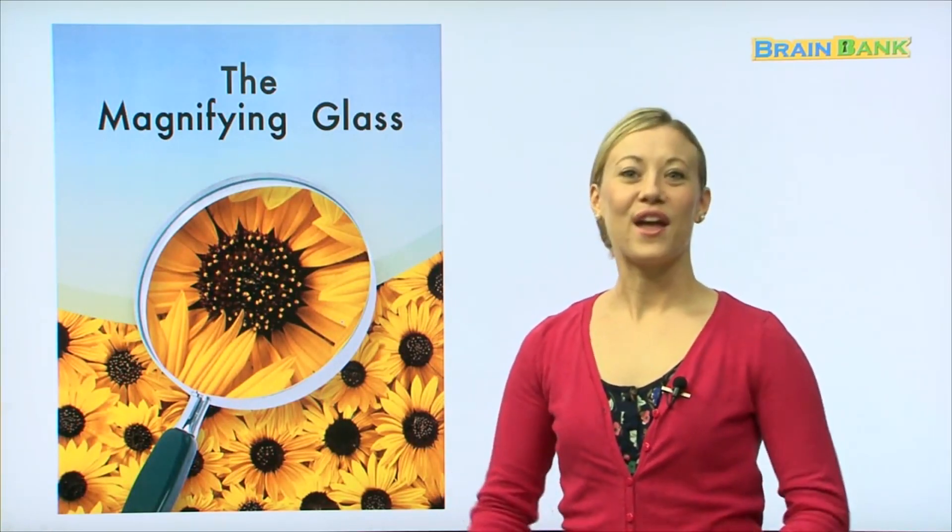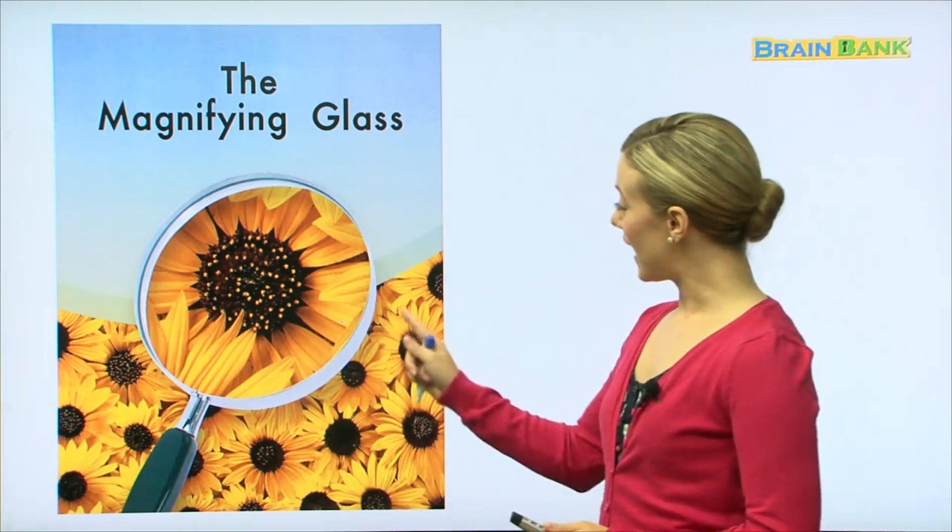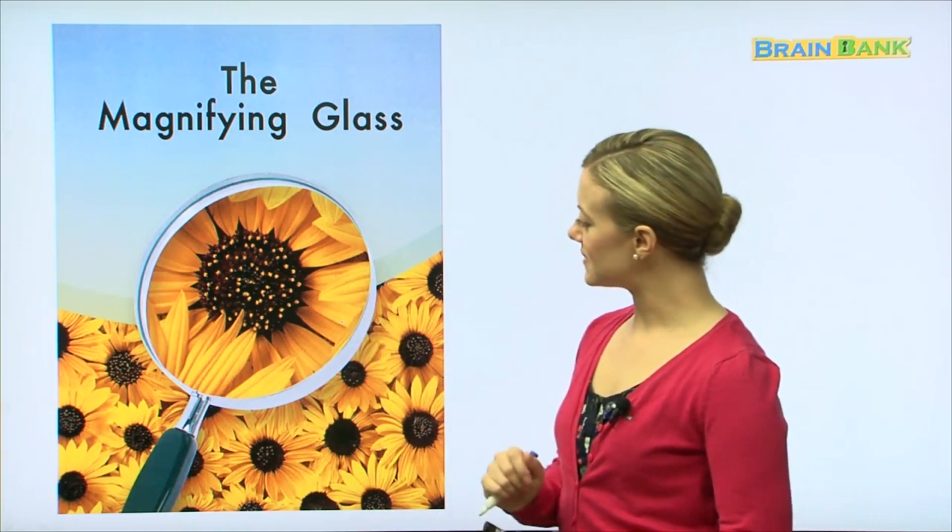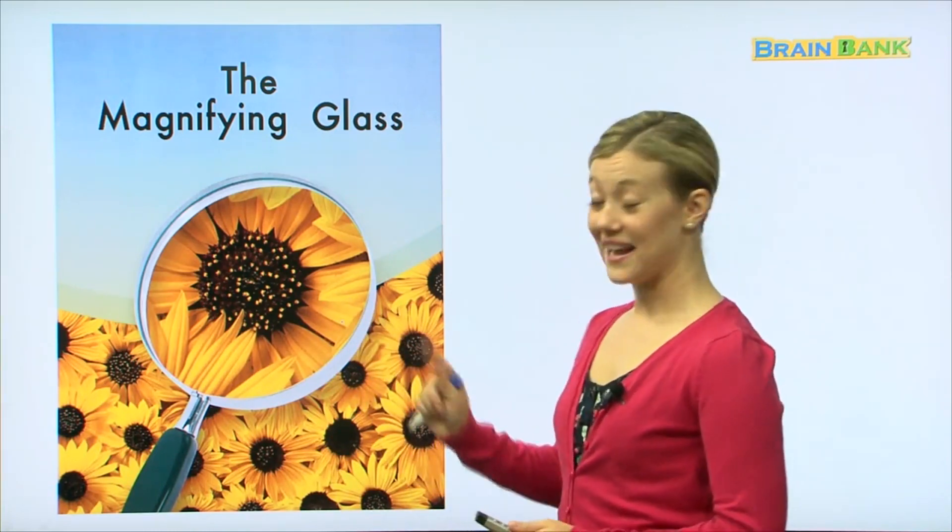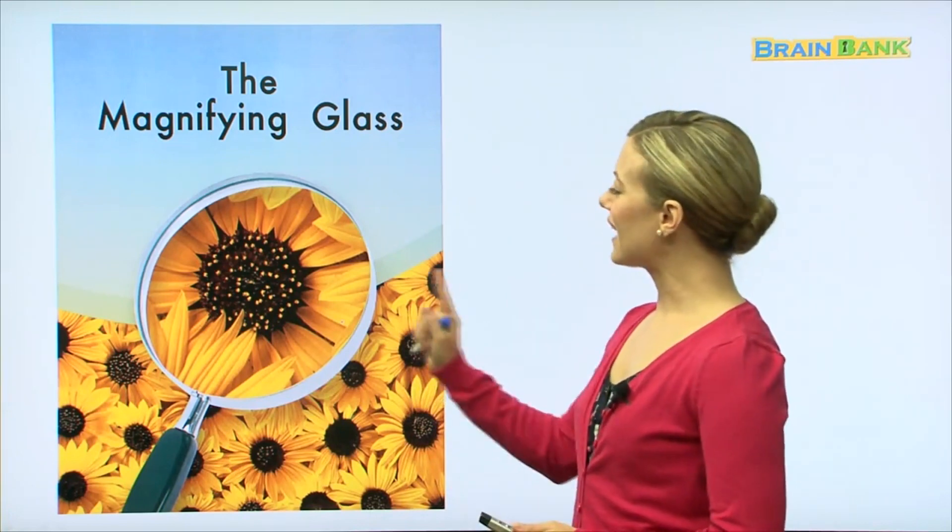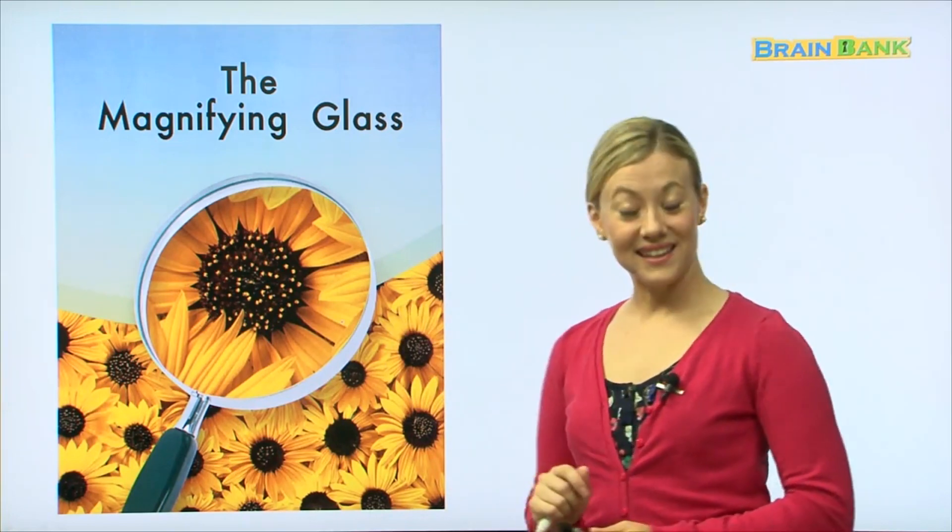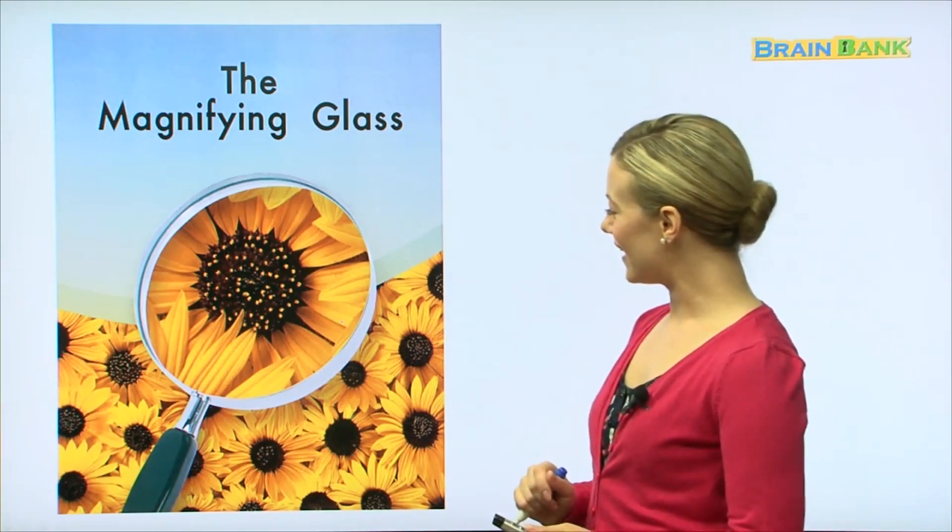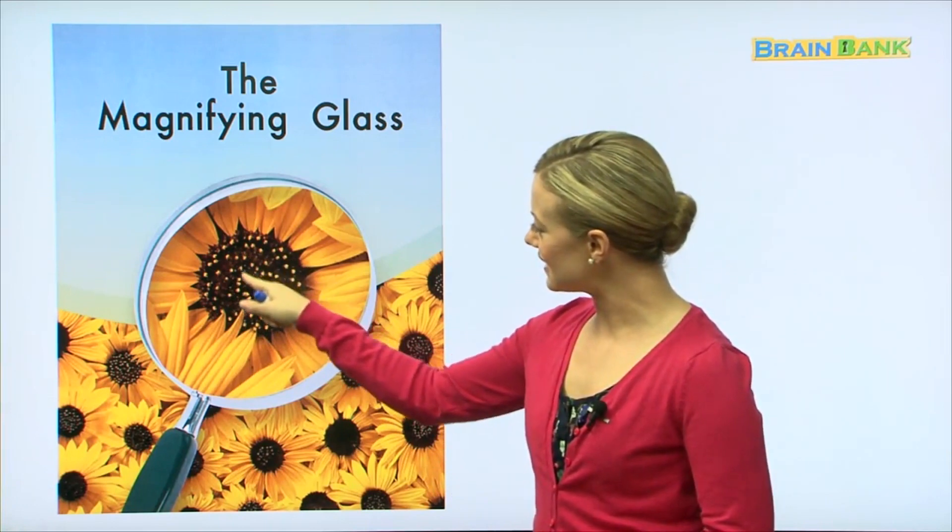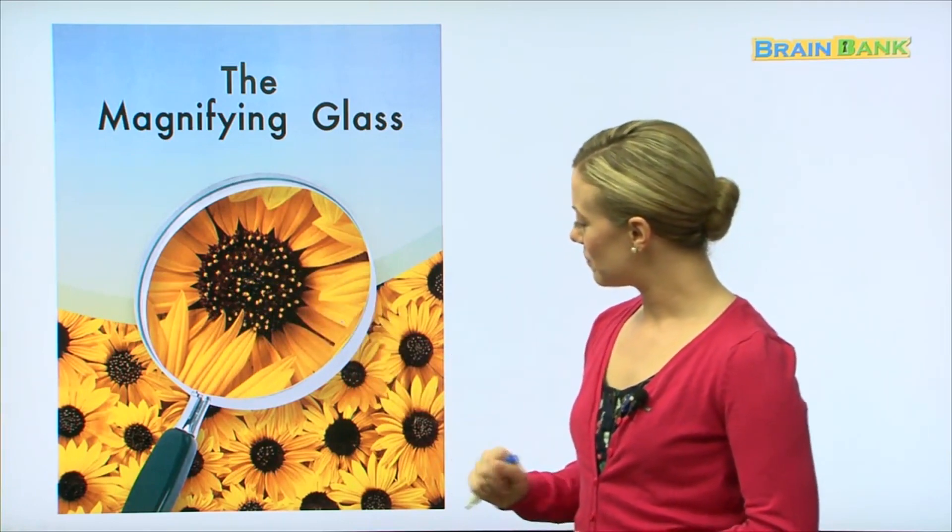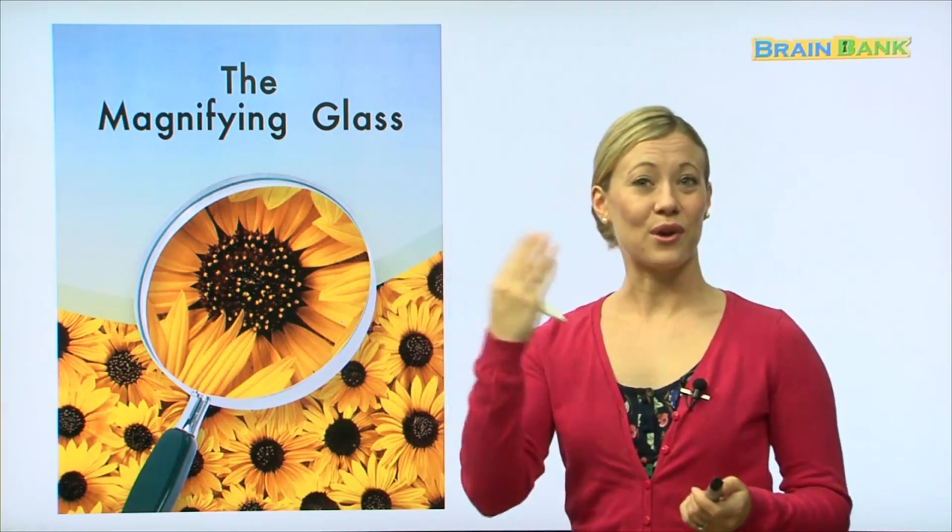So let's read the story, shall we? The magnifying glass. Let's say it all together - the magnifying glass. Very good. And here what do we see in the magnifying glass? Yes, it's a flower. What kind of flower does anyone know? Yes, it looks like a daisy.